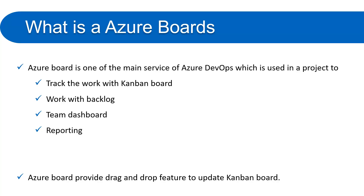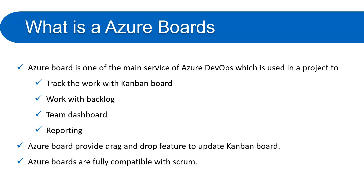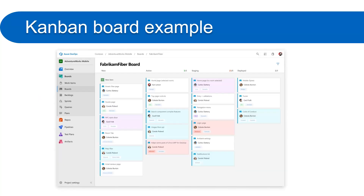Azure Board provides a drag-and-drop feature to update the Kanban board. You can simply drag a task from one column to another column to update the progress of that particular task. Azure Boards are fully compatible with Scrum. If you are working in Agile or Scrum, you work in sprints, and managing those sprints and other Scrum rules is very simple and easy in Azure Boards.